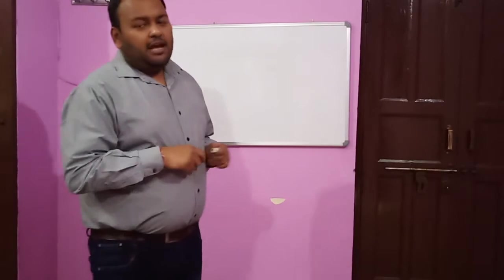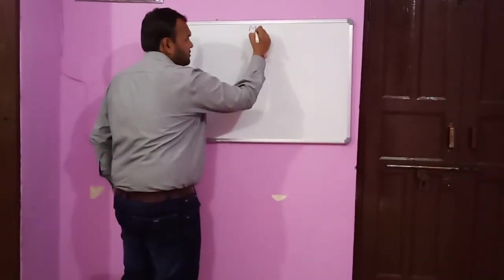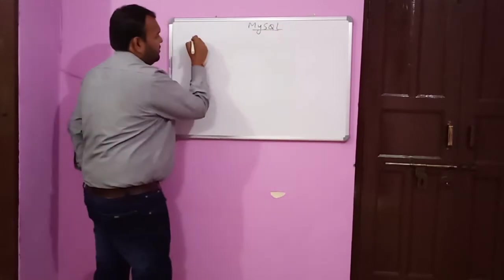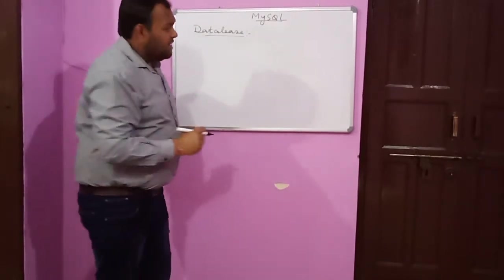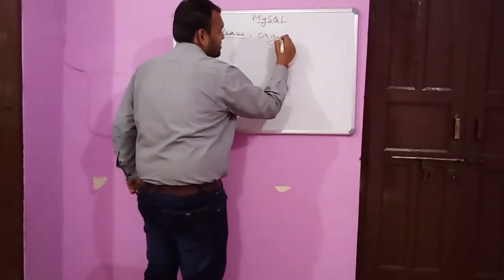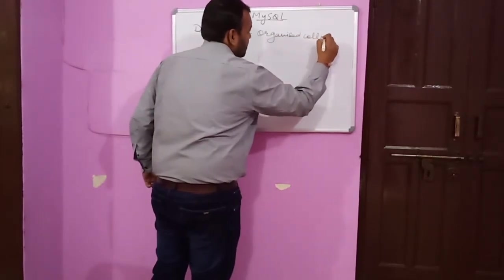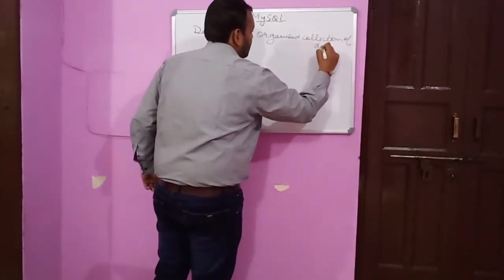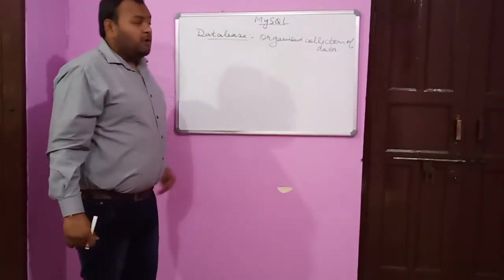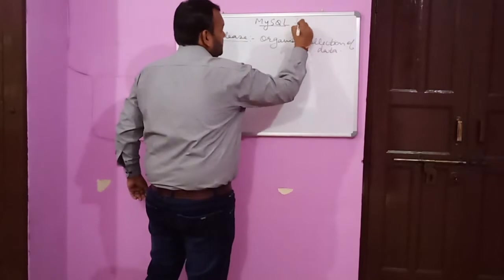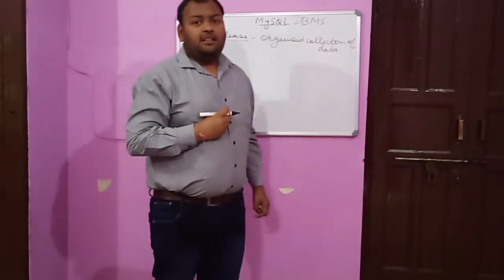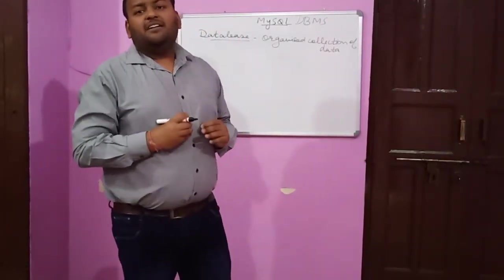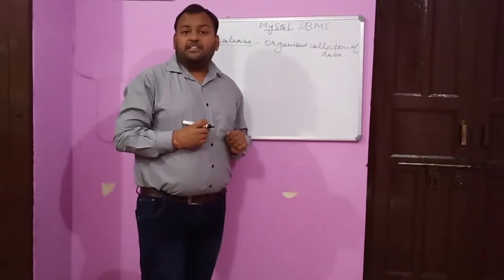Today we are here for the concept of MySQL for class 12. First, what is MySQL? MySQL is a database management system. An organized collection of data is called a database. MySQL is a DBMS that operates upon SQL. There are more than 64,000 tables we can build inside a MySQL database management system.